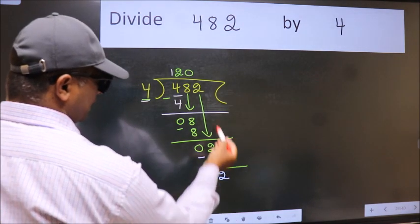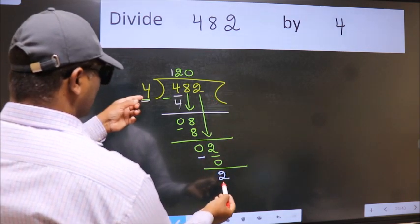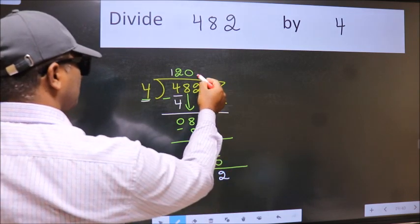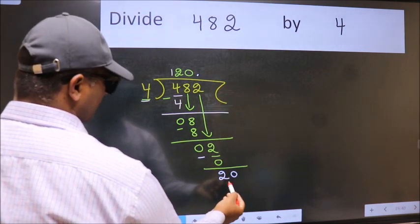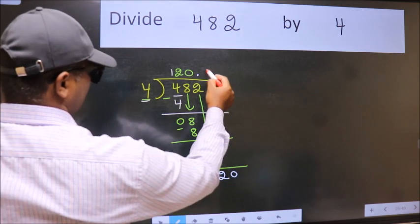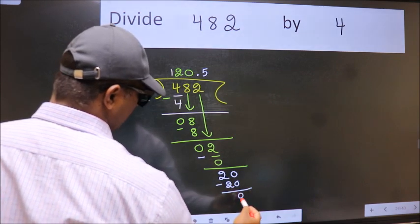Over here, we did not bring any number down, and 2 is smaller than 4. So now we can put a dot and take 0. So, 20. When do we get 20 in the 4 table? 4 fives, 20. Now we subtract. We get 0.